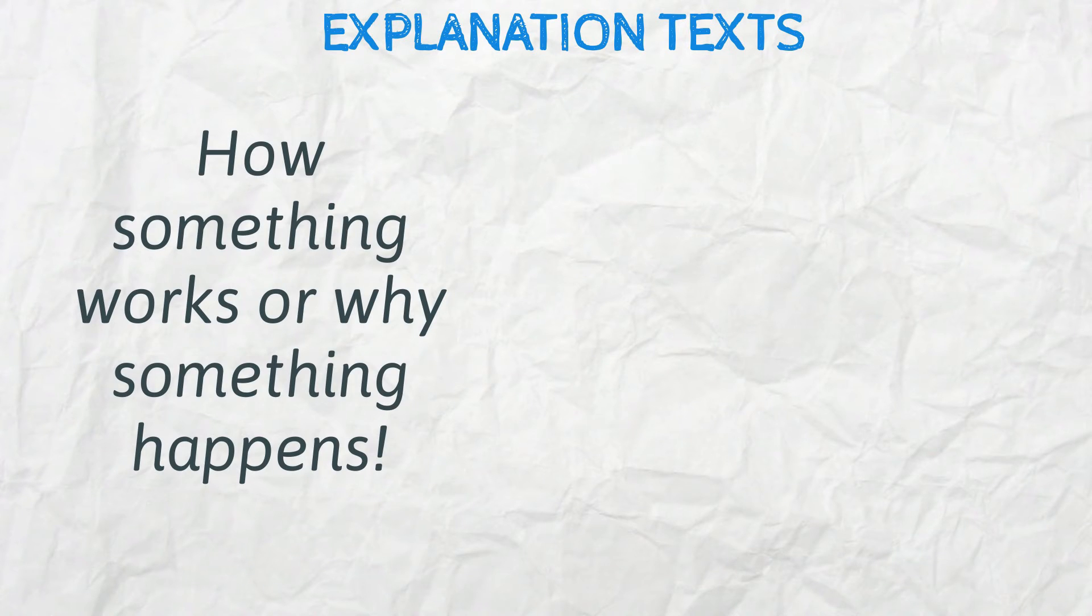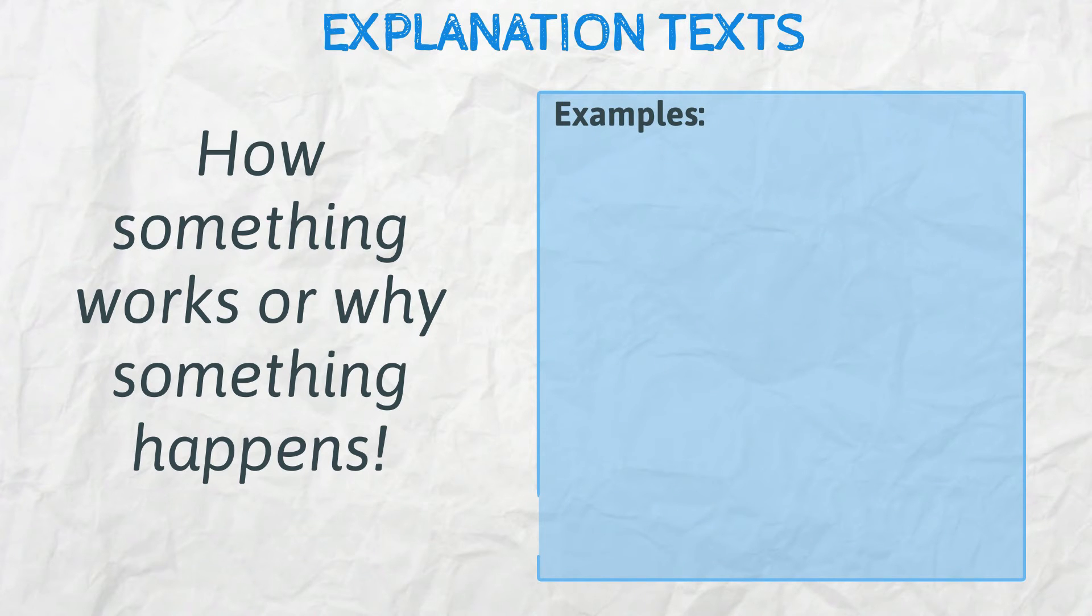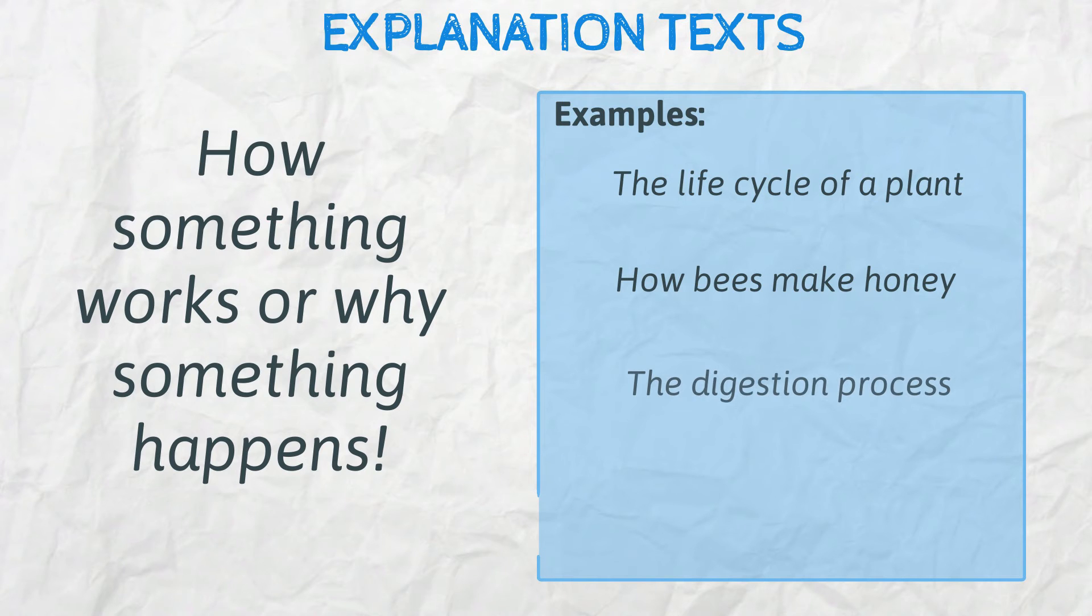Explanation texts. This type of writing explains how something works or why something happens. Examples include the life cycle of a plant, how bees make honey, the digestion process, how humans can get to Mars. When planning, break down your explanation into steps.